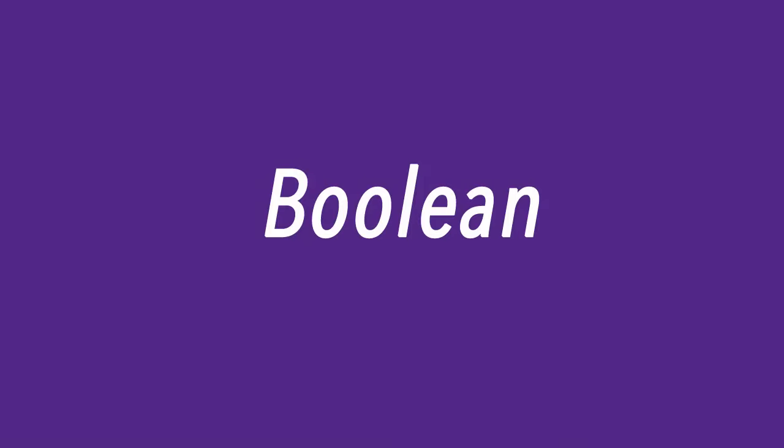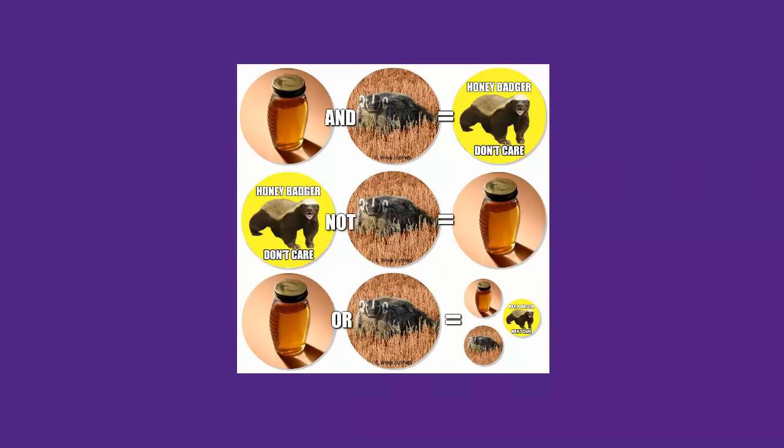Databases use something called Boolean, which requires you to connect keywords together with AND, OR, and NOT. When you use the advanced search option, you won't have to type these connector words — they will already be in place for you.